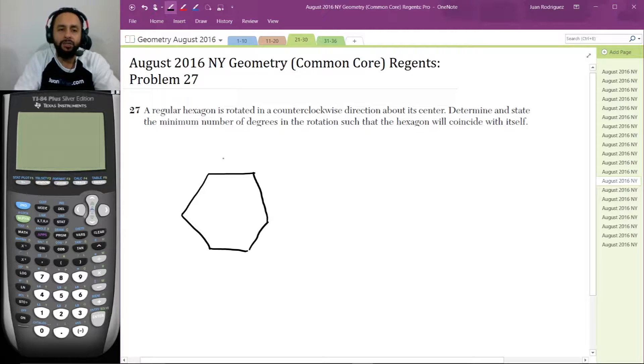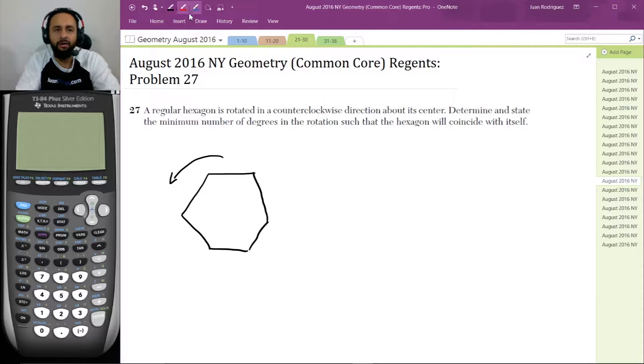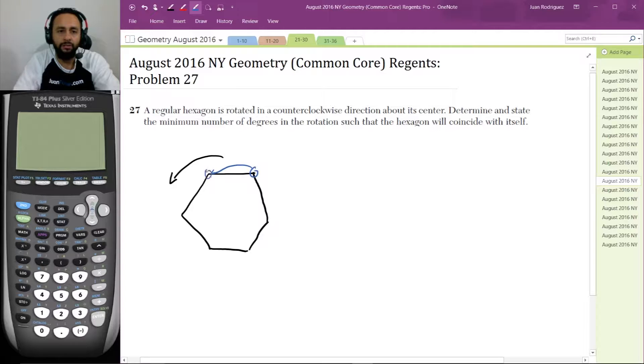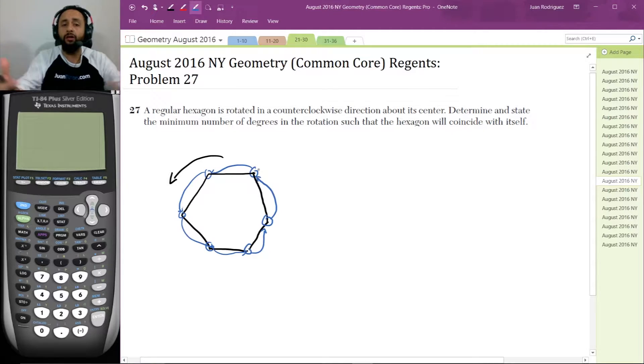But we're spinning it in a counterclockwise direction. Well, if we spin it in a counterclockwise direction, eventually this vertex is going to go here. This one's going to go here. This one's going to go here and all the way around. And then all the vertices will coincide with itself. So the whole shape will coincide with itself.